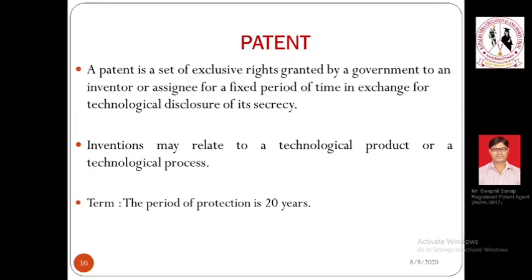Any invention or particular solution which has a technological base and tries to solve a technological problem available in existing products, services, or literature is eligible to get a patent right — and this is the eligible subject matter for filing a patent as a type of IPR. For example, in very ancient times there were no calculators available.